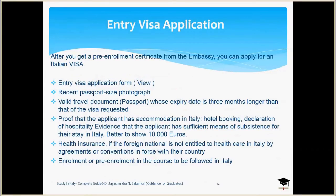To submit the entry visa application, there is no need to visit the Italian Embassy — instead, you can visit any of the application centers and drop your documents there. Before going for the visa, you must already have arranged accommodation in Italy. Contact the international student office of the Italian university where you have been admitted and request accommodation. They normally have ties with housing service providers and will give you the relevant contacts. You need to show proof of accommodation.